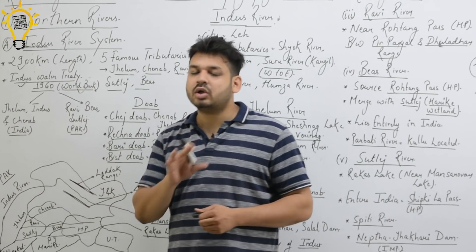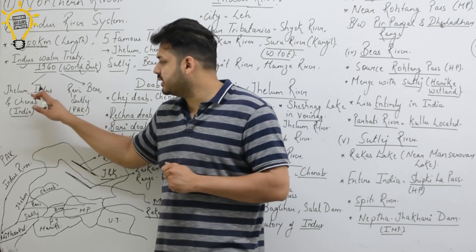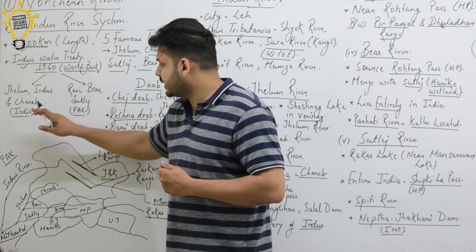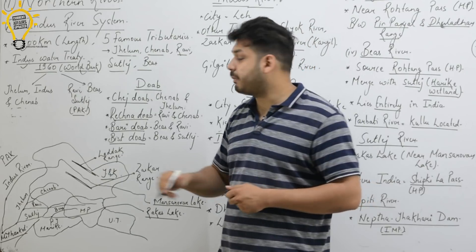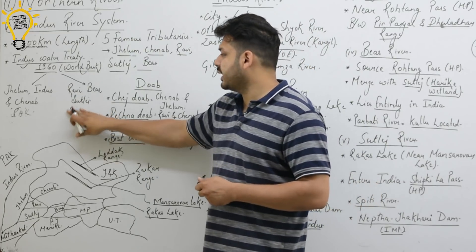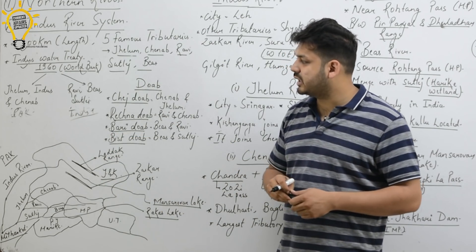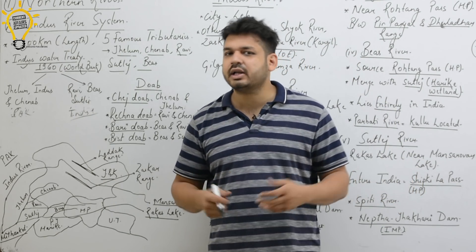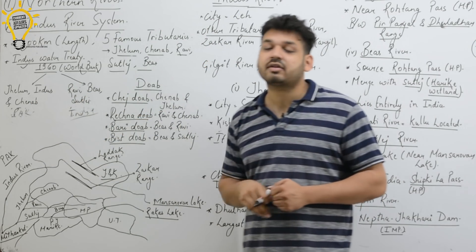Under this treaty, looking at the 6 rivers (Indus and its 5 tributaries), Jhelam, Indus, and Chenab go to Pakistan, while Ravi, Vyash, and Satlaj go to India. This does not mean these rivers totally belong to Pakistan — India can still divert water from Jhelam, Indus, and Chenab. These three rivers originate in India.